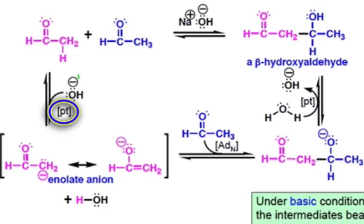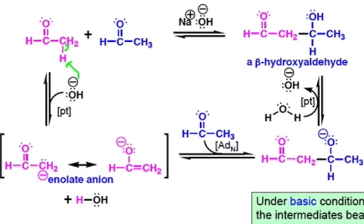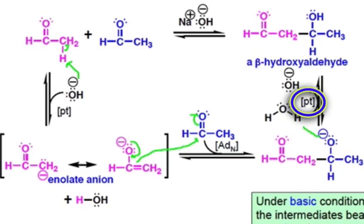The first step in the mechanism is a simple proton transfer to deprotonate the alpha proton on the alpha carbon and create a resonance-stabilized enolate anion. The enolate anion then acts as a nucleophile and attacks the carbonyl carbon of another molecule of acetaldehyde in an addition step. And finally, a proton transfer leads us to the product.